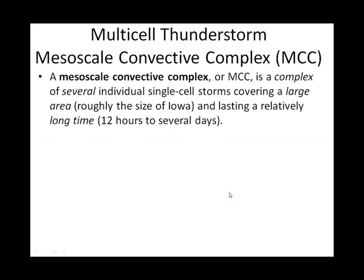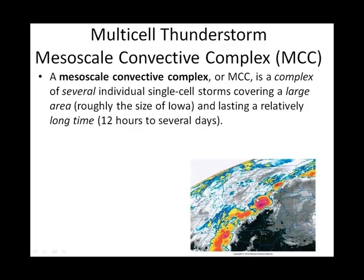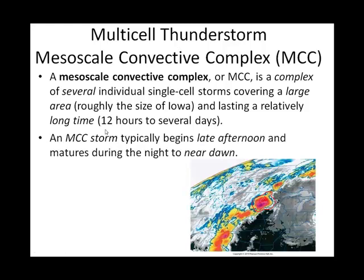The other type of multi-cell system is called a mesoscale convective complex — the blob ones. Looking at a satellite infrared image, infrared tells us temperature, and the cloud tops of these systems are very cold. This blob on the image is multiple thunderstorm cells. They can last a long time — a half a day to several days. If you're lying in bed hearing thunder rumbling all night long, that could be a mesoscale convective complex.